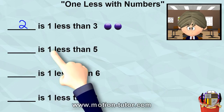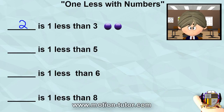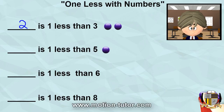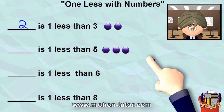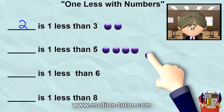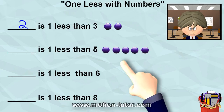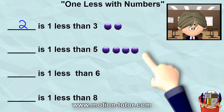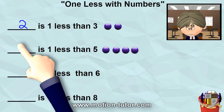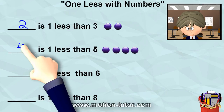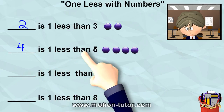Something is one less than five. So we're going to get five and take a look at this. Here's three, four, and five. So one less than this five is one, two, three, four. So that means four is one less than five.